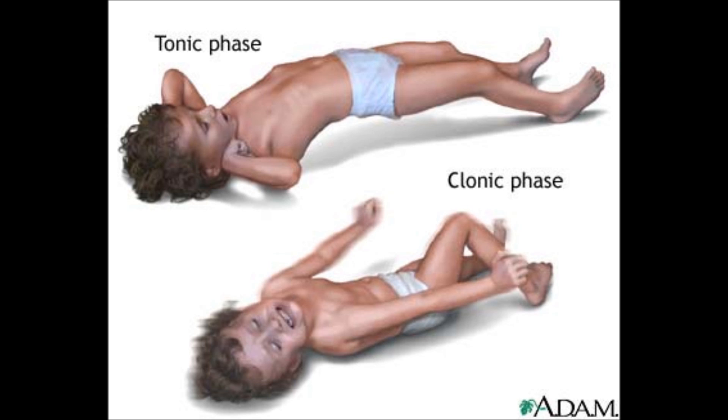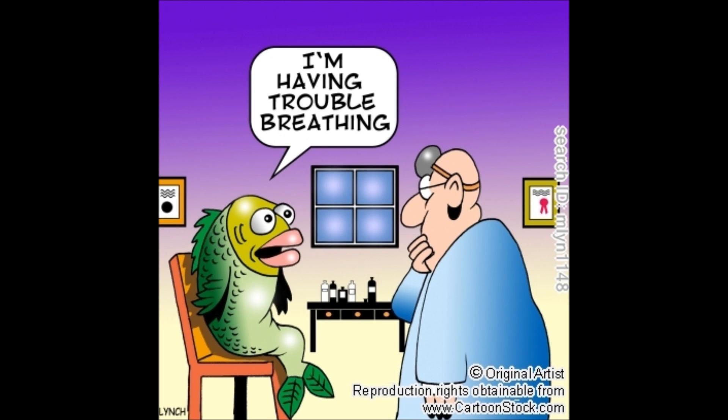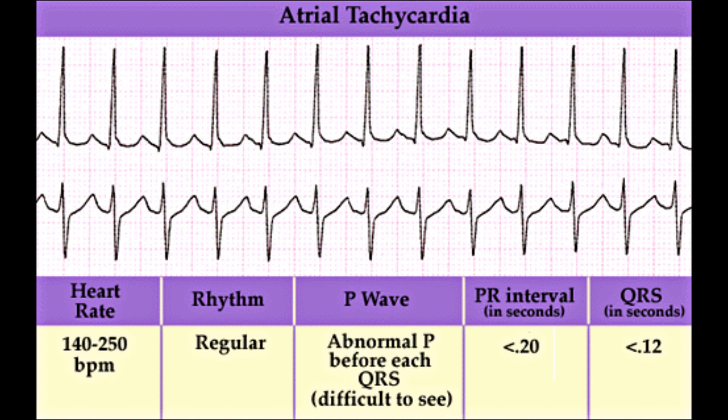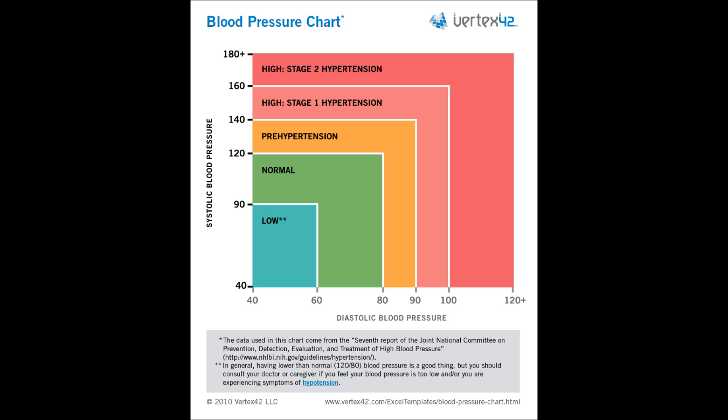If hypernatremia is severe, a patient may have seizures. Other signs include difficulty breathing or dyspnea, crackles or rales heard in the lungs, increased heart rate or tachycardia, and either low blood pressure (hypotension) or high blood pressure (hypertension).